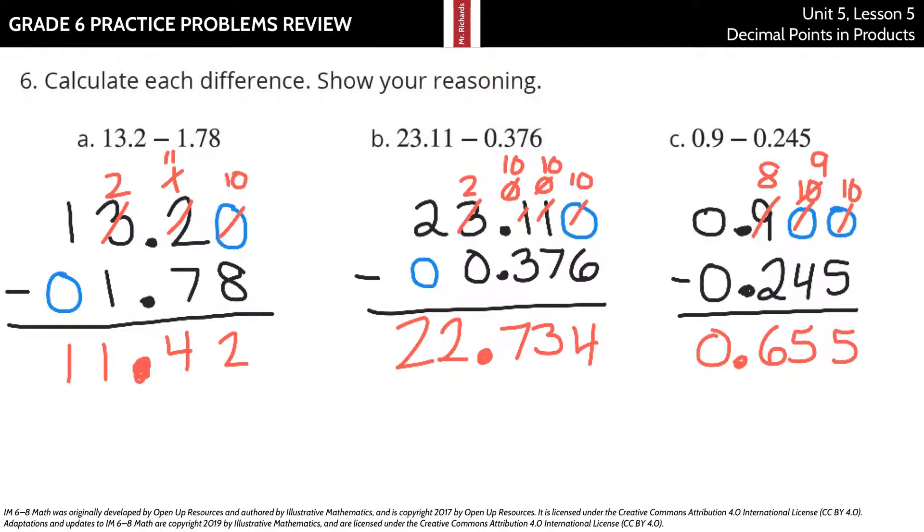Same thing on these other questions. Ten minus six is four. Ten minus seven is three. Ten minus three is seven. Two minus zero is two. Two minus zero is two again with your decimal point coming down.